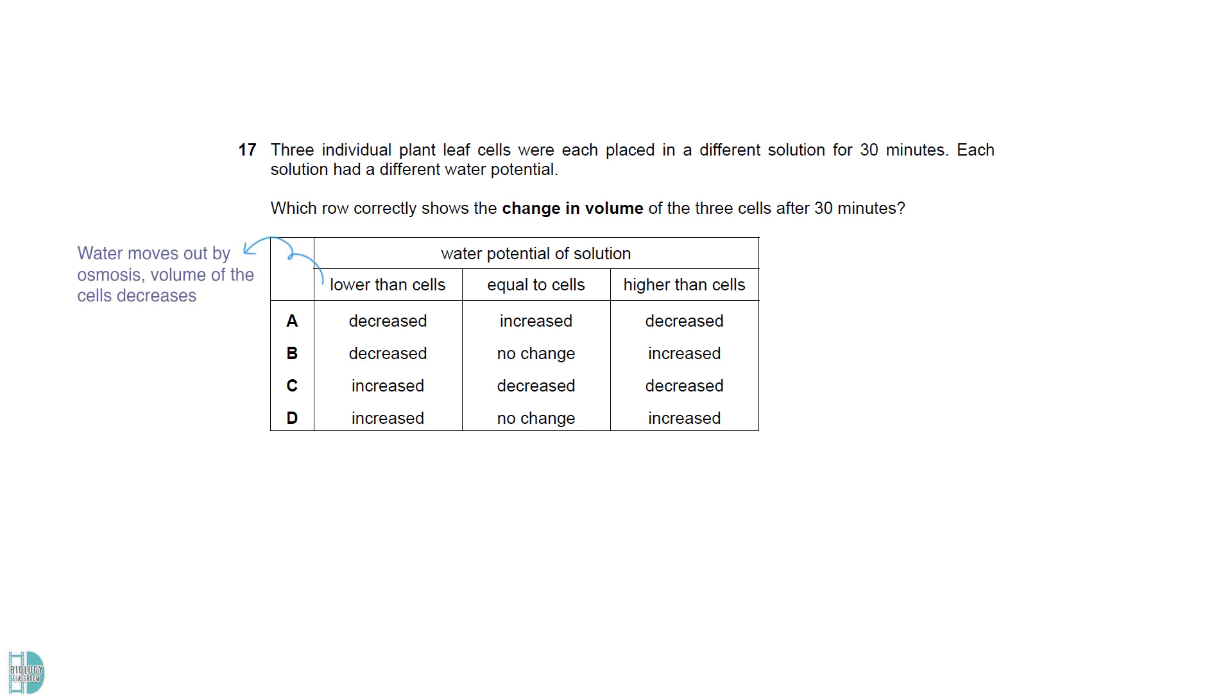If the water potential of the solution is lower than the cells, water moves out by osmosis and the volume of cells decreases and vice versa. If the water potential is the same, there is no net movement of water in and out. The volume of the cells remains unchanged.